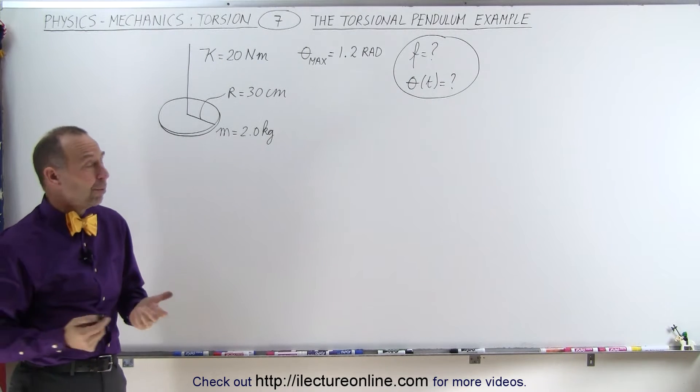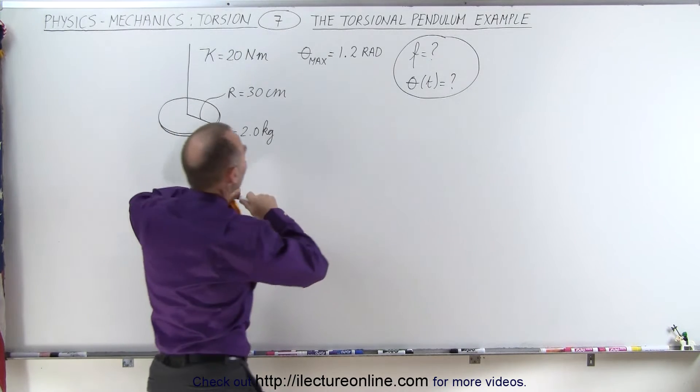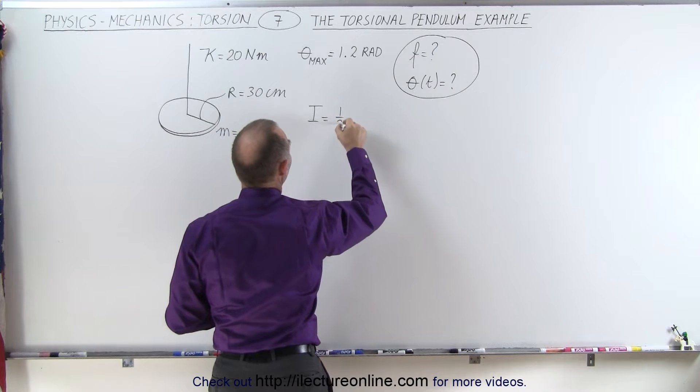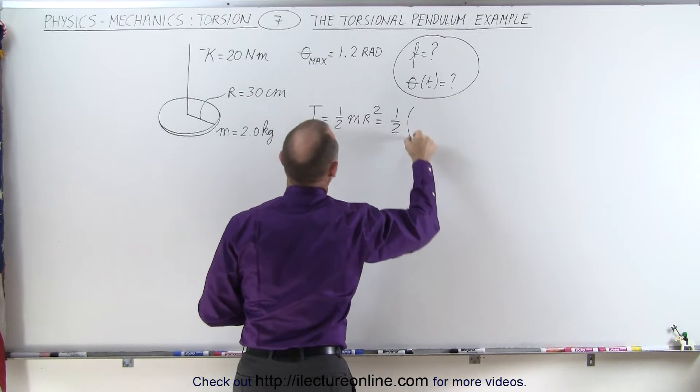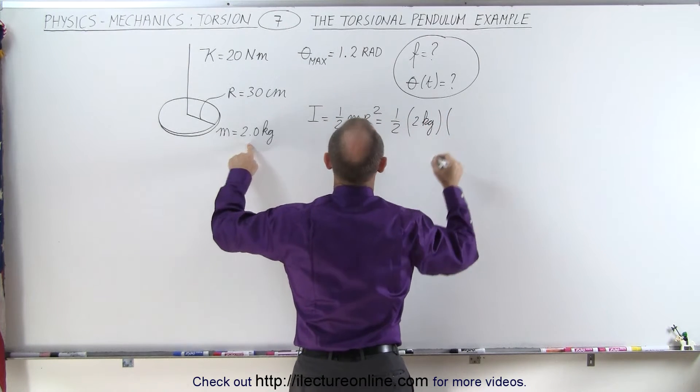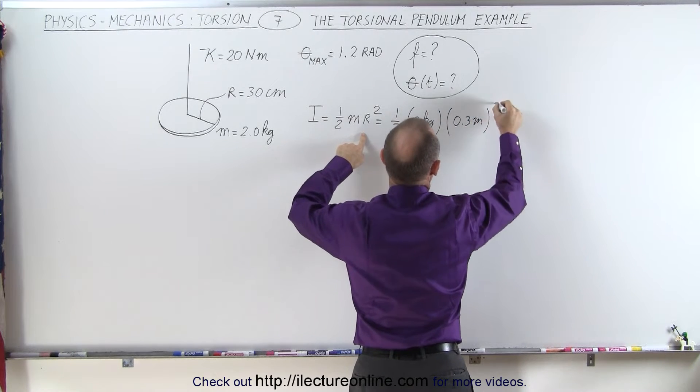To do that, we're going to need the moment of inertia of this disc. Since it's a solid disc, the moment of inertia I equals 1/2 mr², which is 1/2 times 2 kg times the radius 0.3 meters quantity squared.